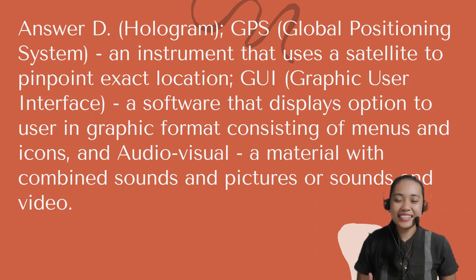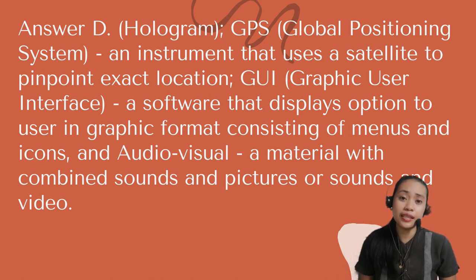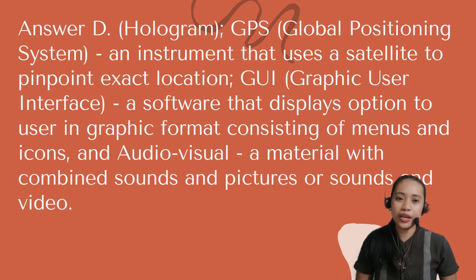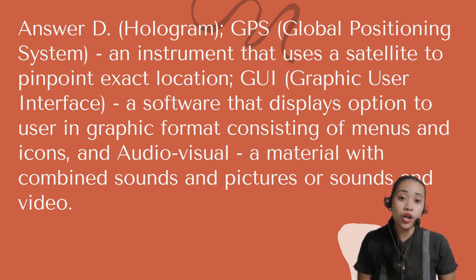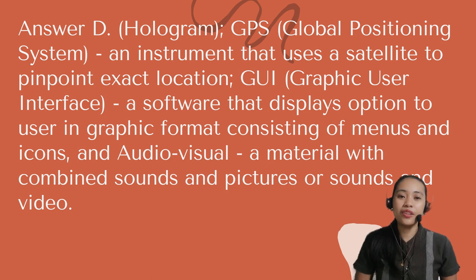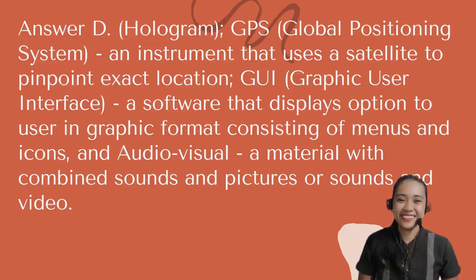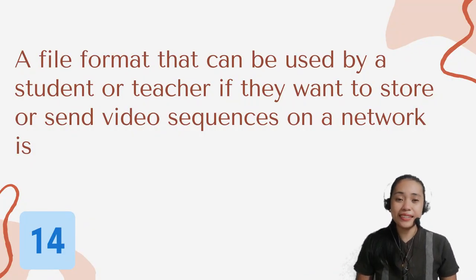Well done. The correct answer is letter D — Hologram. GPS, or Global Positioning System, is an instrument that uses a satellite to pinpoint an exact location. GUI, or Graphic User Interface, is a software that displays options to users in graphic format consisting of menus and icons. And audio visual is a material with combined sounds and pictures or sounds and video.